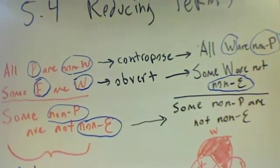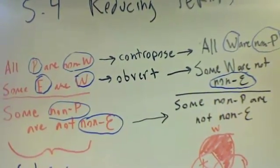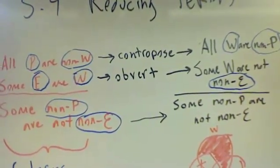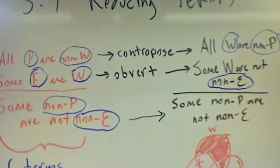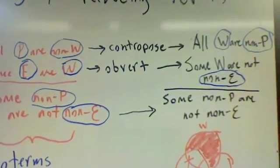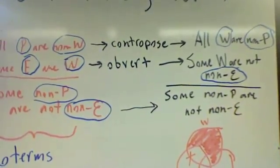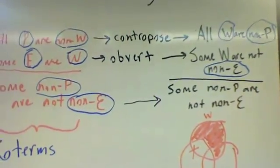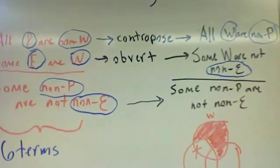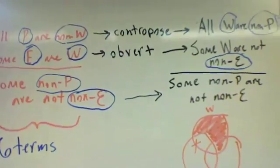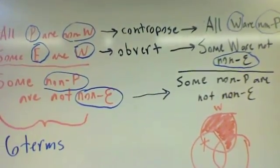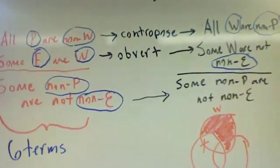Similarly, that second premise — some E are W — I've been able to translate as some W are not non-E by using obversion. I've translated all P are non-W to all W are non-P. This way, I've reduced my terms to just three: W, non-P, and non-E, and I left the conclusion the same, which is some non-P are not non-E. You may have to pause this to really take a look at it, but it works perfectly.